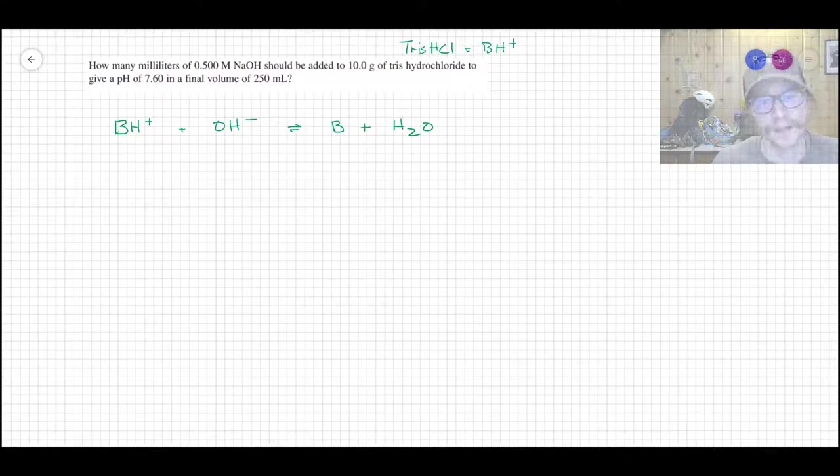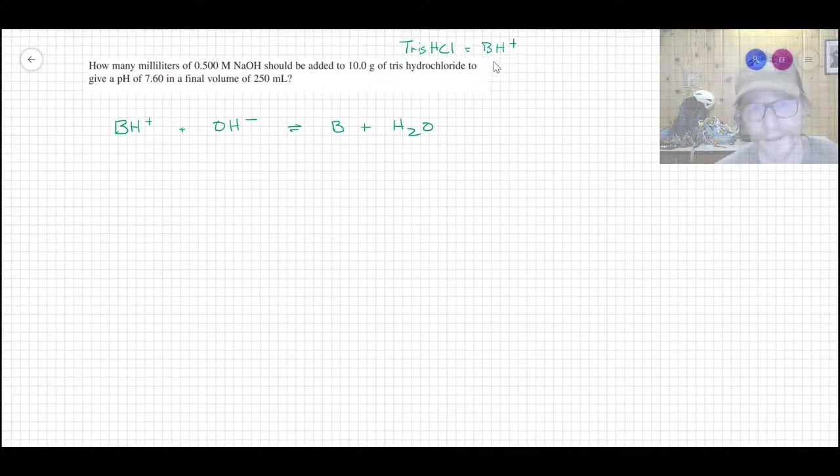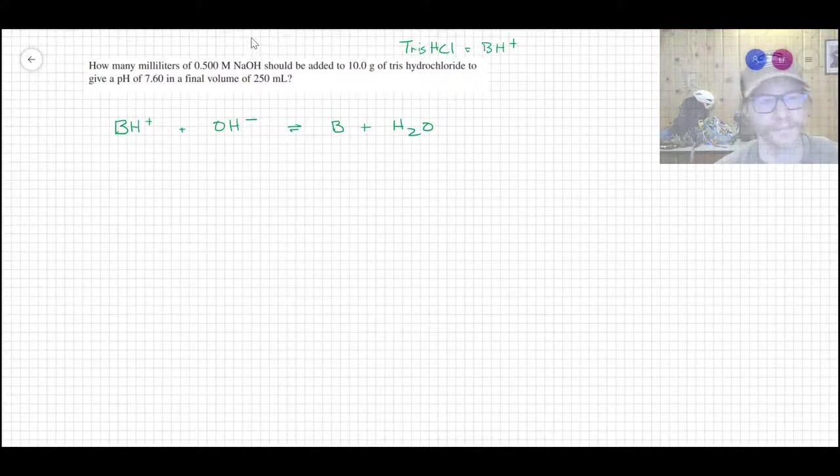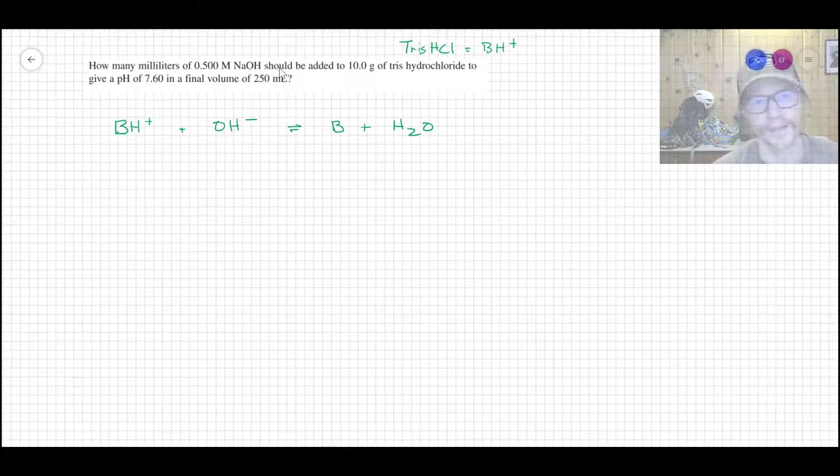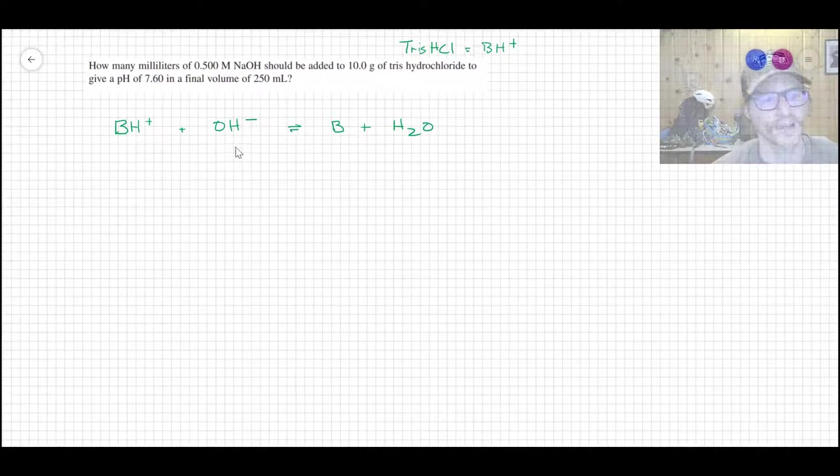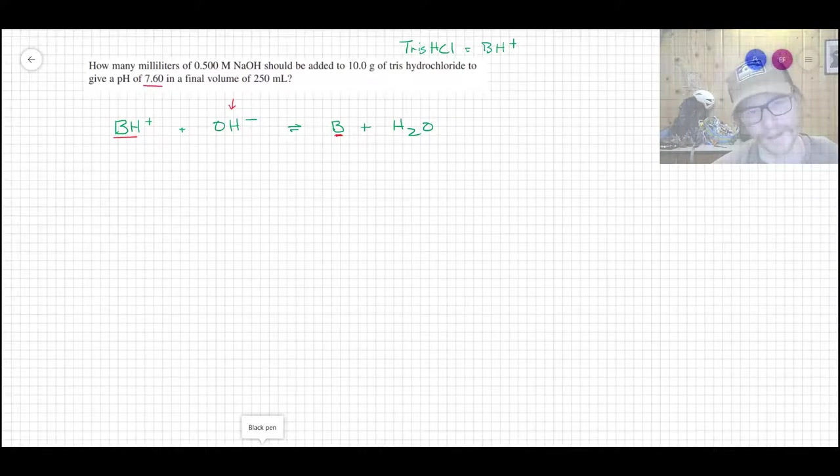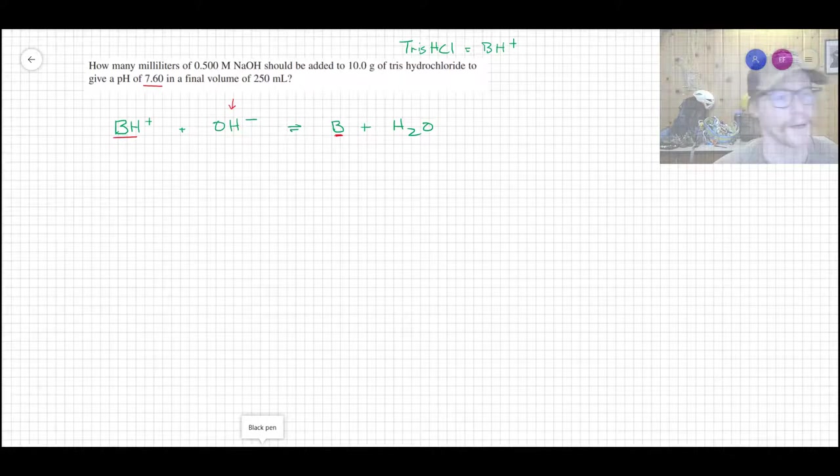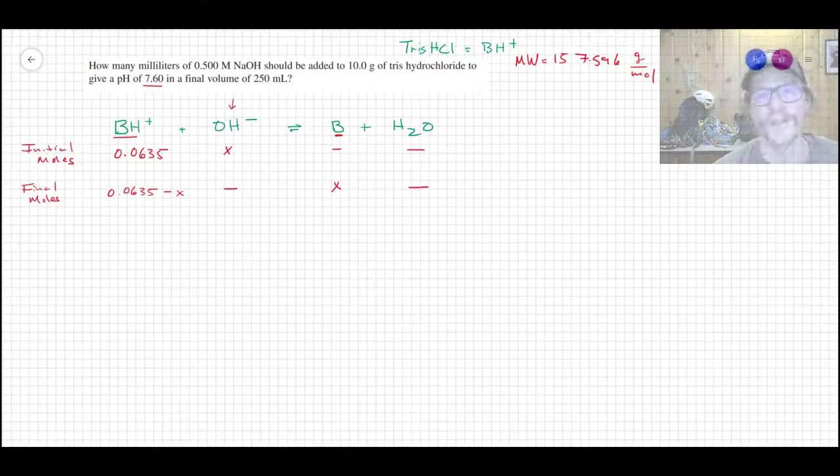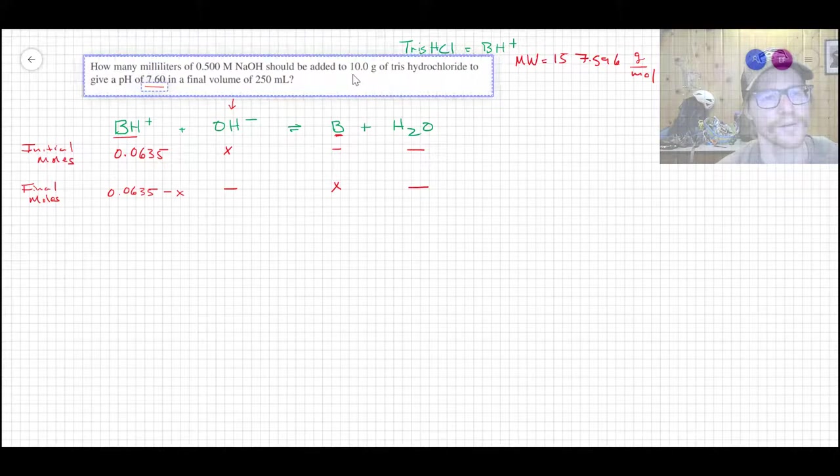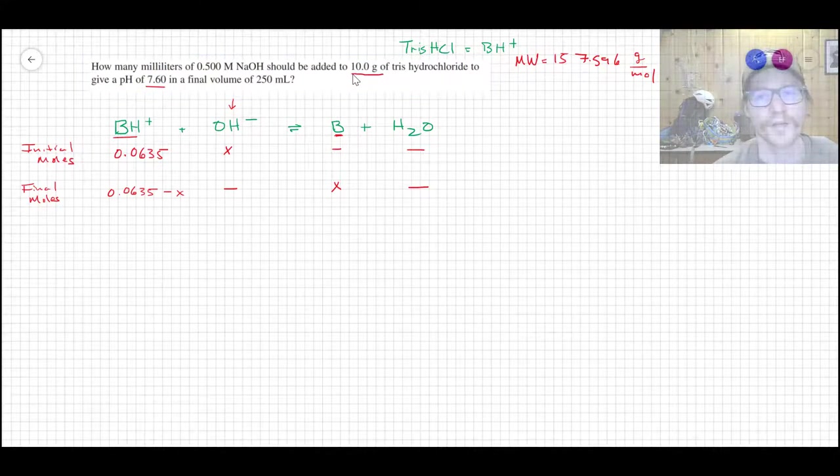And so in this case we have Tris-HCl which we just talked about in the previous video. That's the protonated form of the base. So I'm just going to simplify that by writing it out as BH+. And then we have pure sodium hydroxide, a 0.5 molar solution of it, which is just a strong base. So what we're really doing is taking the protonated form BH+, we're adding strong base and we're making some amount of the B or the base.